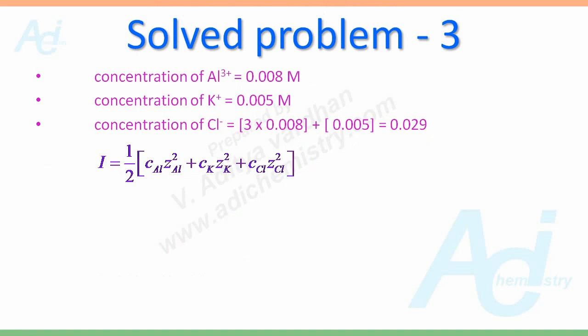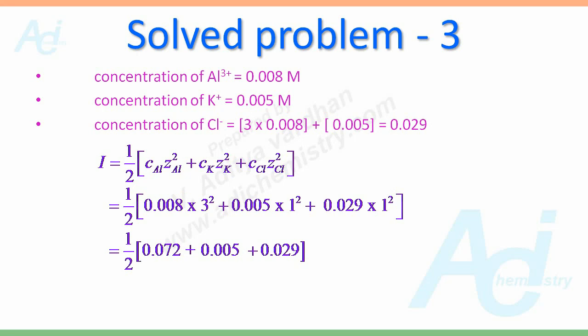Let us plug in these values into the equation. I equals half into CAlZAl square plus CKZK square plus CClZCl square. We know the concentrations of Al3 plus, K plus, Cl minus as well as the charges. For Aluminium it is 3. For potassium it is plus 1. And for Cl it is minus 1. Just use the absolute values only. So final value is 0.053. This is the ionic strength of mixed solution.